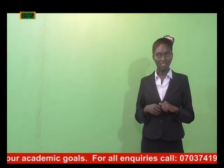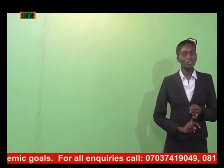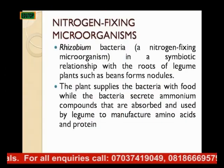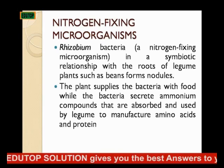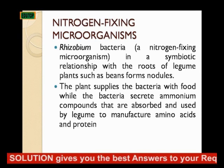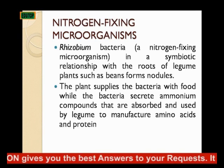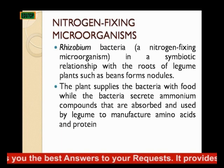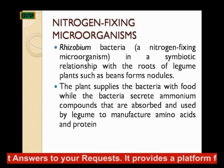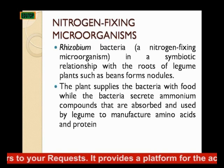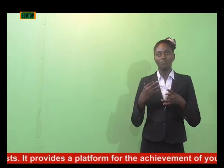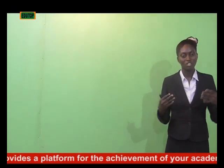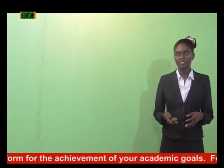Nitrogen-fixing microorganisms: Rhizobium bacteria is a nitrogen-fixing microorganism in a symbiotic relationship with the roots of legume plants such as beans, forming nodules. The plant supplies the bacteria with food while the bacteria secrete ammonia compounds that are absorbed and used by the legume to manufacture amino acids and protein. So it is a symbiotic relationship in which both benefit.